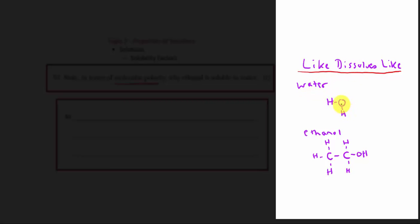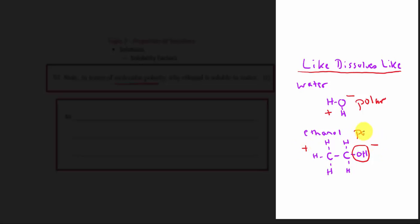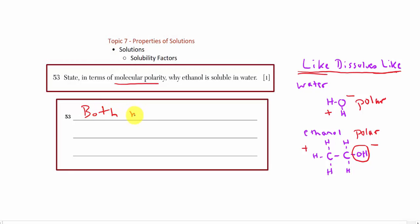Analyzing the water molecule: it has a bent shape with a negative side and a positive side — it is a polar molecule due to the uneven distribution of electrons. The ethanol molecule from organic chemistry has two carbons, five hydrogens, and a hydroxyl group on one side. That side carries more electron activity, so ethanol is also a polar molecule. Like dissolves like — both molecules are polar. That's the answer.